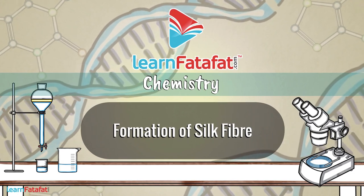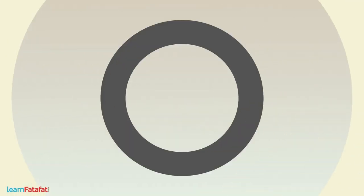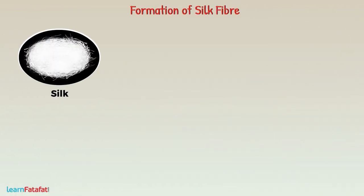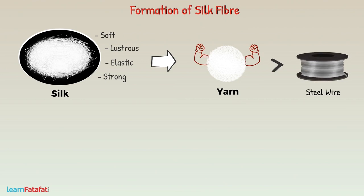Formation of Silk Fiber. Silk is a very important natural fiber. It is soft, lustrous, elastic and strong. You will be surprised to hear that yarn produced by silkworms is much stronger than a steel wire of similar thickness. More importantly, it can be colored very easily.